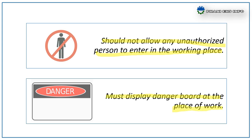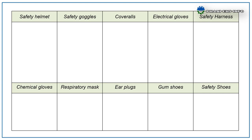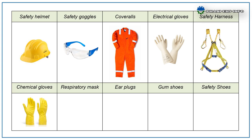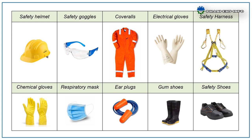Personal protective equipment: availability of required PPE is important. Persons involved in power plant activities should wear coveralls or boiler suits at all times during the job, along with the required PPE based on the activity. Examples include: safety helmet, safety goggles, coveralls, electrical gloves, safety harness, chemical gloves, respiratory mask, ear plugs, gum boots, safety shoes, etc.